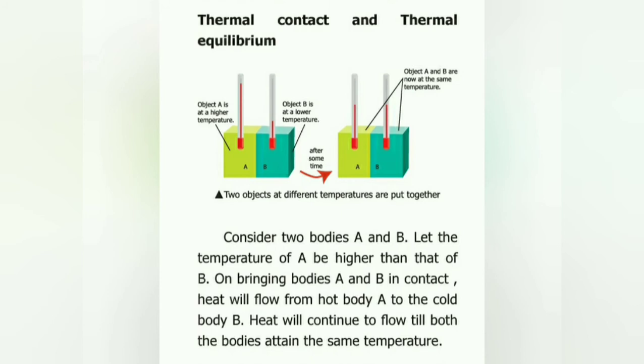Consider two bodies A and B. Let the temperature of A be higher than that of B. On bringing bodies A and B into contact, heat will flow from hot body A to cold body B. The heat will continue to flow until both bodies attain the same temperature. When two different objects come together, we call it thermal contact. At the point where there is no more flow of heat from the hot body to the cold body, we call it thermal equilibrium.